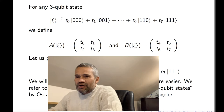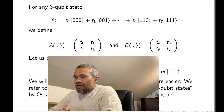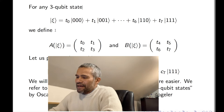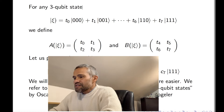Before starting the procedure, we are going to define two matrices for any 3-qubit state. We have a 3-qubit state with eight complex numbers, and we define two matrices. The matrix A of this 3-qubit state is the matrix with entries T0, T1, T2, T3 — using the first four complex numbers. And B of this 3-qubit state is T4, T5, T6, T7.